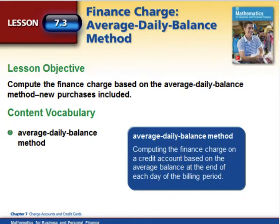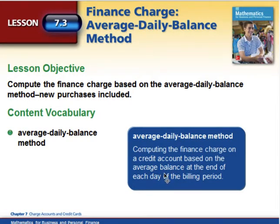What they're actually going to do is break down the month and figure out what your balance is per day, and find the interest and finance charges based on what you owe for that time period. The average daily balance method is computing the finance charges on a credit account based on the average balance at the end of the period.